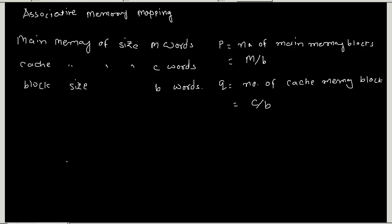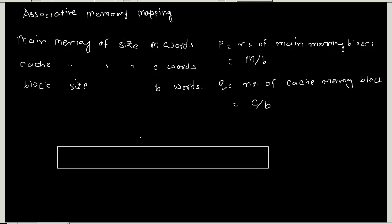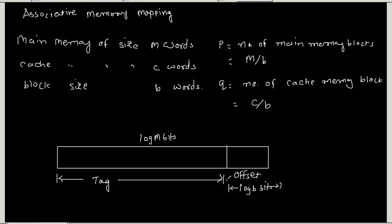Small q, the number of cache memory blocks, would be c divided by b. The address issued by the processor would be log m bits long. The first part from the left side would be the offset, with a size of log b bits. The second whole part is a tag. In associative memory mapping, the whole address is divided into only two parts: tag and offset.